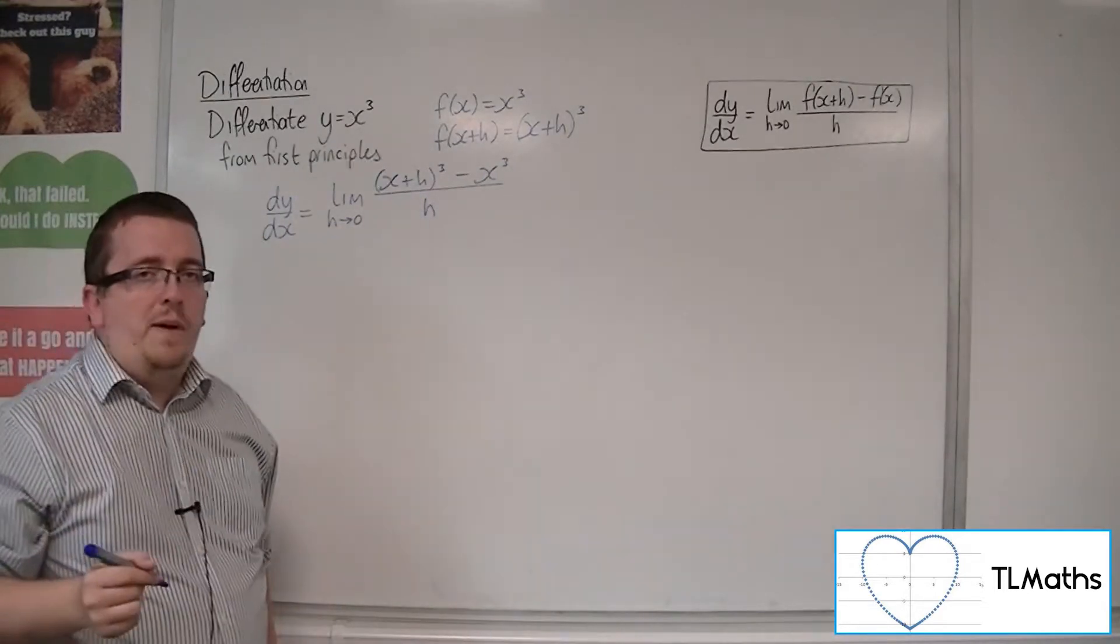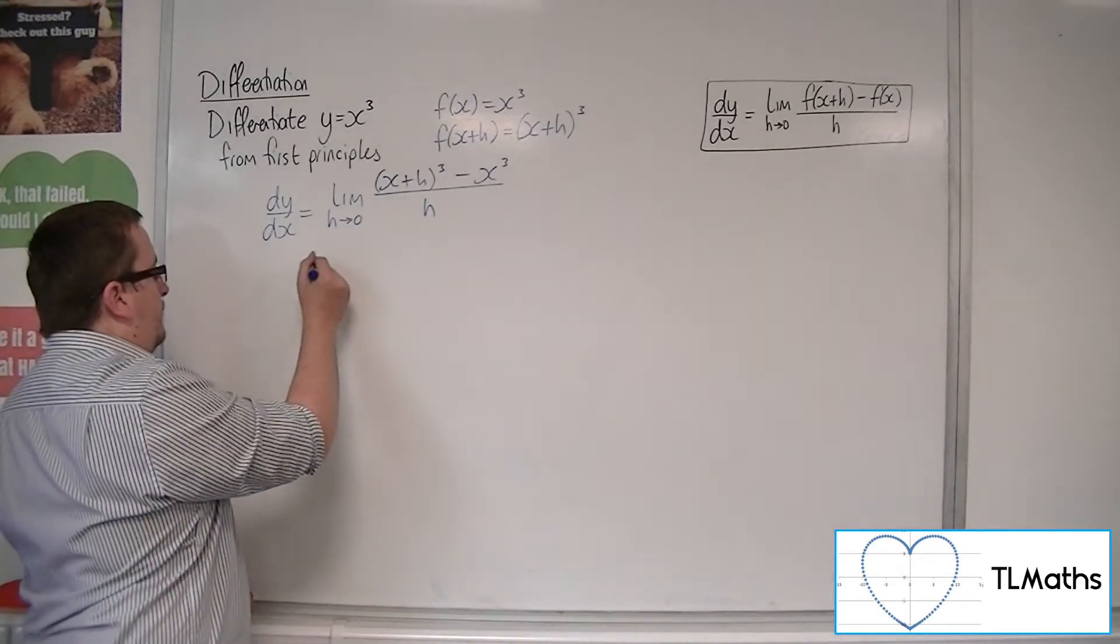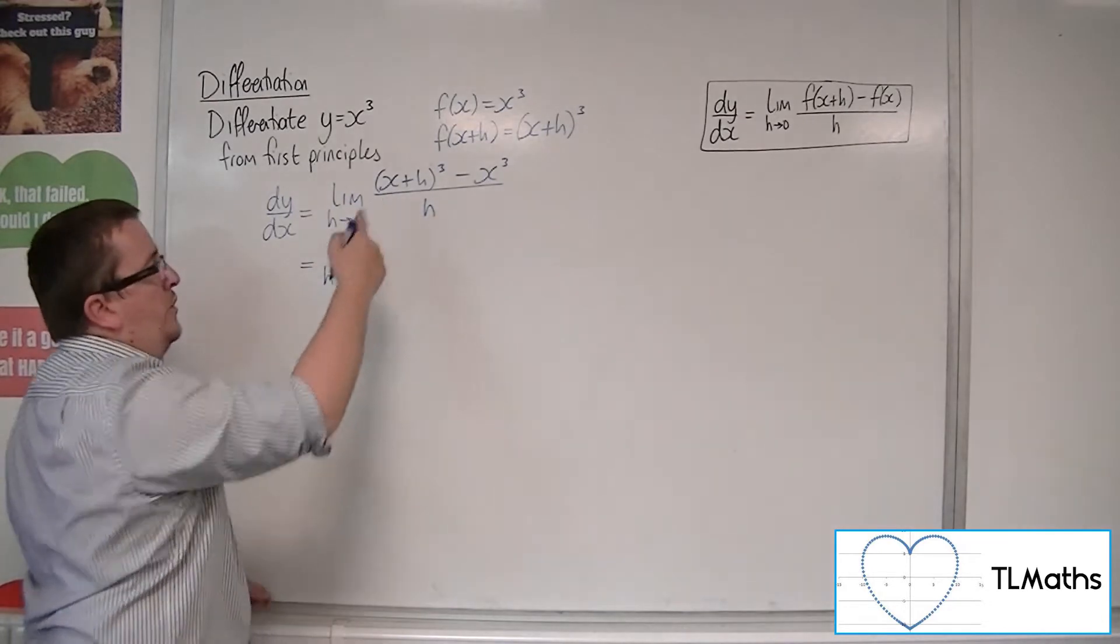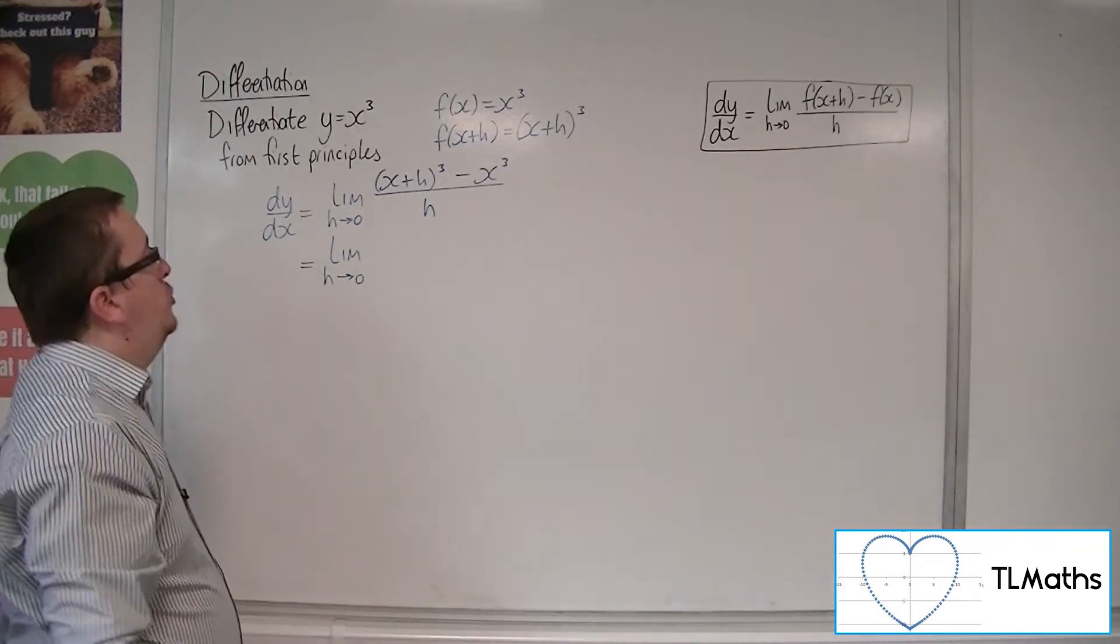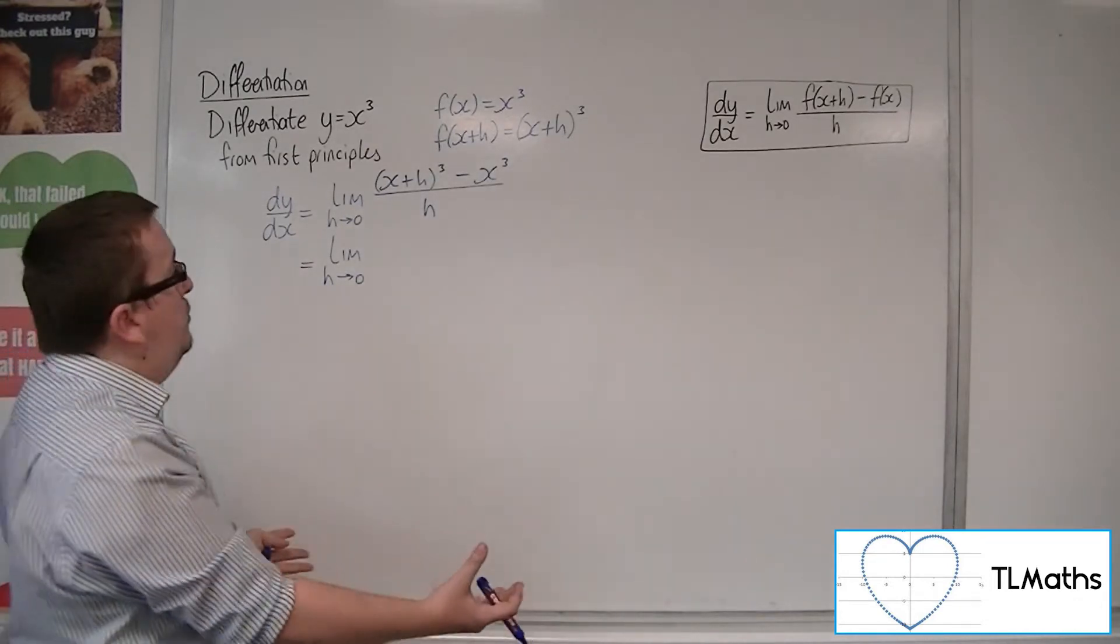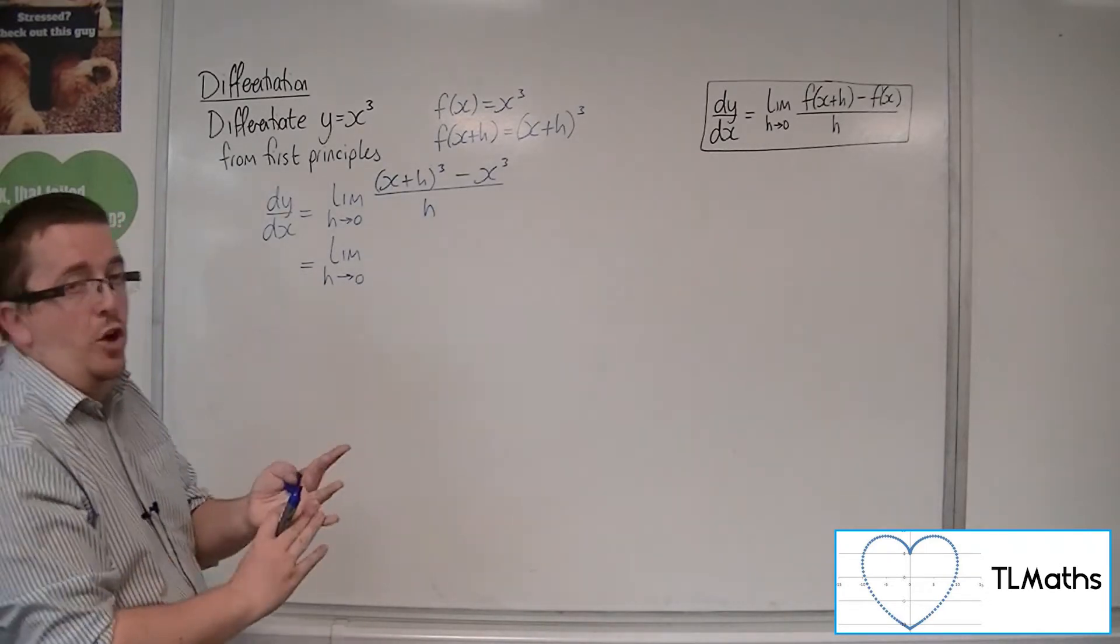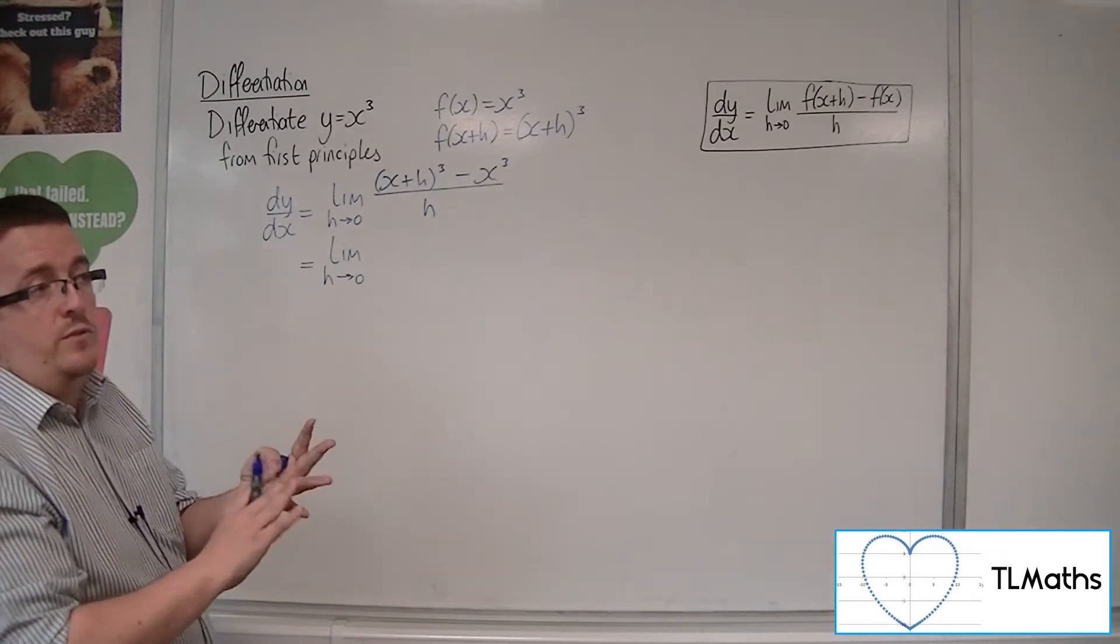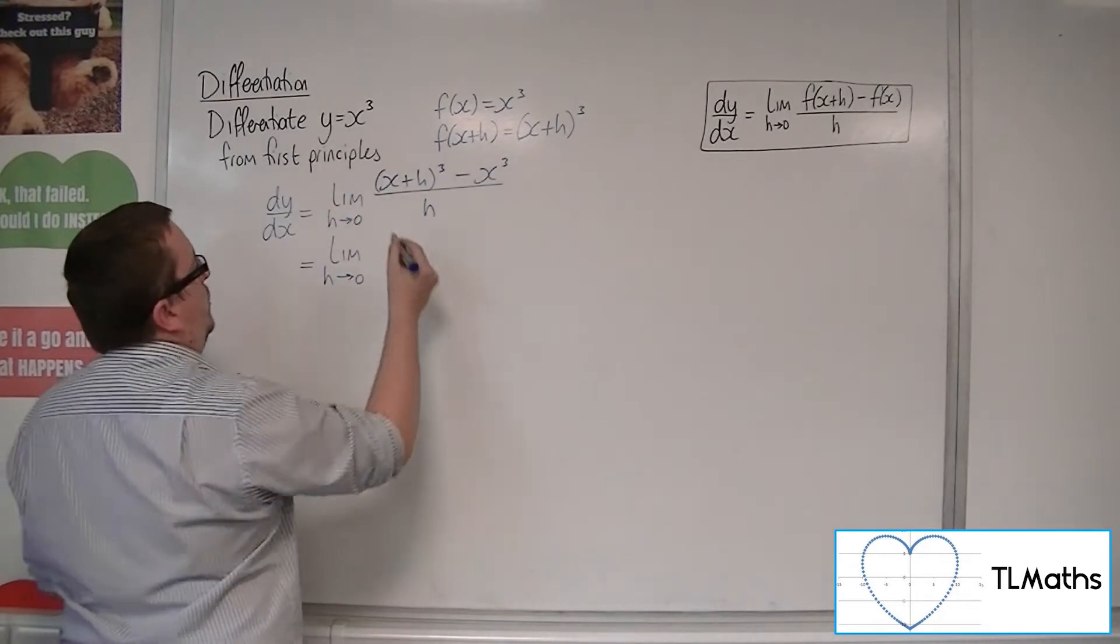Now we need to expand those brackets. In doing that, you expand (x+h) times (x+h), get that, then multiply that by (x+h). You can multiply it out like so, but if you've done some binomial expansion already, you may be able to do that directly. So let's say we've multiplied it all out.